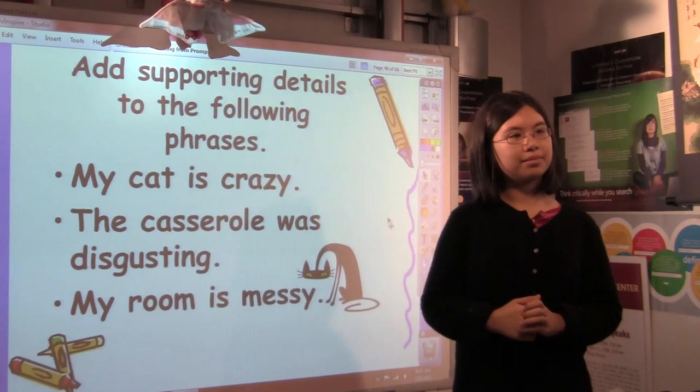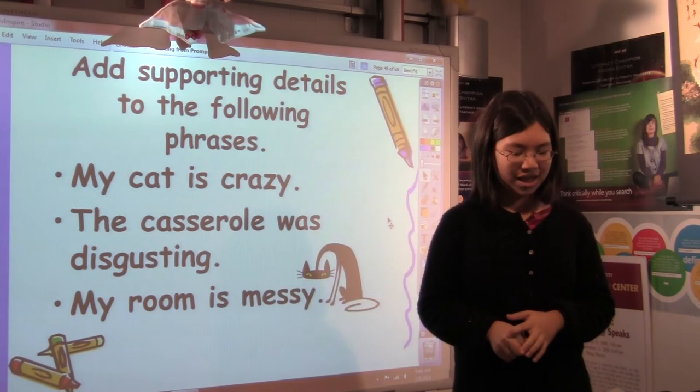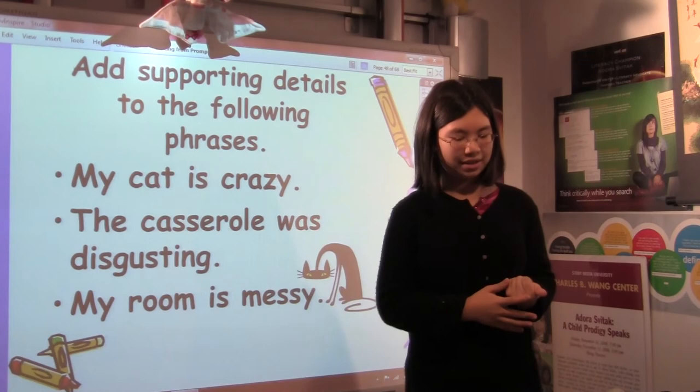How would you add descriptive details to the casserole was disgusting? This guy went, Jack. The casserole tasted like moldy pizza that's been out for a month. Okay. Maybe the casserole tastes like moldy pizza that's been out for a month. It was gooey and gluey and it was, and the fact that it was colored bright green did not help my stomach one bit.